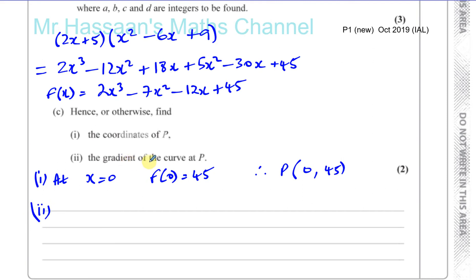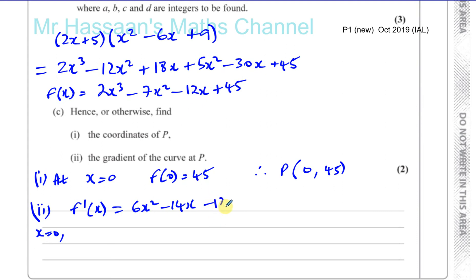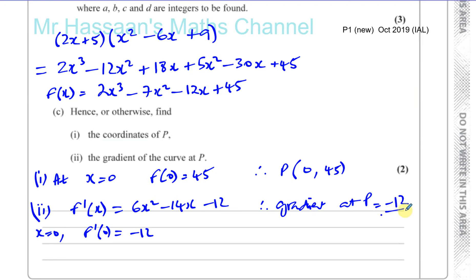Part C also says find the gradient of the curve at P. We need to differentiate f of x to get the gradient function f dash of x. Differentiating 2x cubed minus 7x squared minus 12x plus 45 gives 6x squared minus 14x minus 12. Putting x equals 0 into the gradient function: we get 0 minus 0 minus 12. Therefore the gradient at P is equal to minus 12.